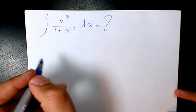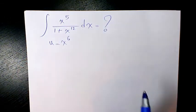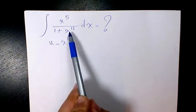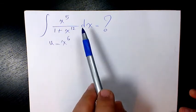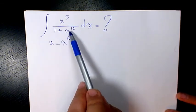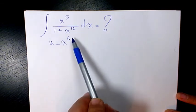First thing I need to do is consider u as x to the power of 6. Because here we see 1 plus x to the power of 12 looks like 1 plus u squared. So u squared will be x to the power of 12. So it means that u is x to the power of 6.